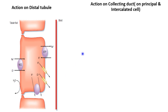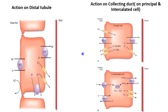The action on the collecting duct: there are two special cells in the collecting duct — the principal cell and the intercalated cell. The principal cell, with the help of aldosterone, forms epithelial sodium channels. These epithelial sodium channels help the reabsorption of sodium from the luminal surface to the inside of the cell.